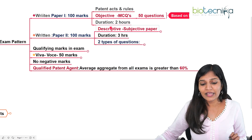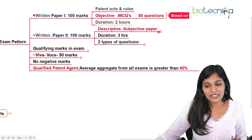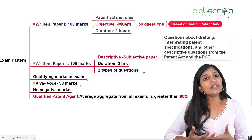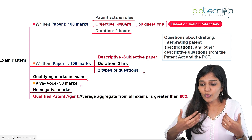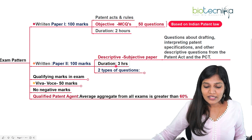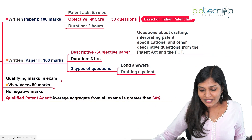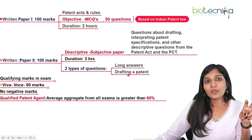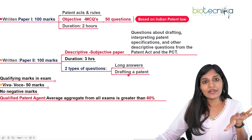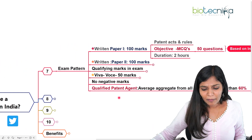Paper 2 is also a written examination, but it is descriptive and subjective — no MCQs here. The questions focus on how to write or draft a patent, and how to interpret an invention given to you, analyzing it according to the Patent Act and PCT (Patent Cooperation Treaty). The duration for Paper 2 is three hours, with two types of questions: long answer type, and drafting a patent based on a given innovation.